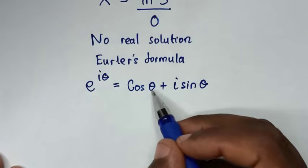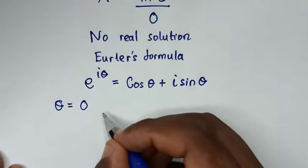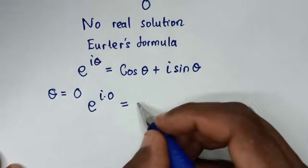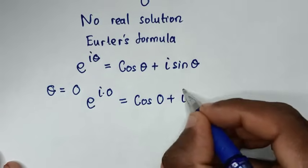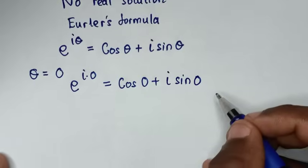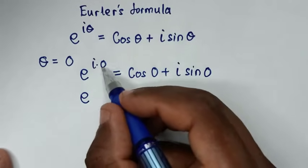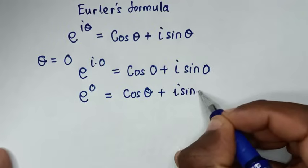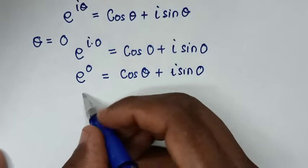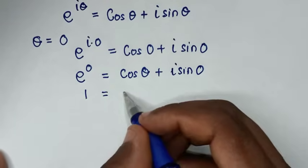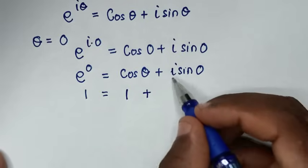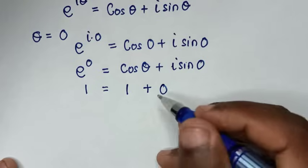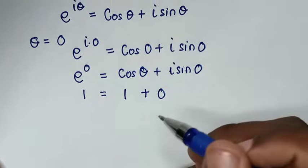We'll verify this Euler's identity by substituting θ = 0. For θ = 0, it becomes e to the power of i·0 equals cos(0) plus i·sin(0). So e to the power of 0 is 1, cos(0) is 1, and i·sin(0) is 0. So 1 plus 0 equals 1 — the formula is satisfied.